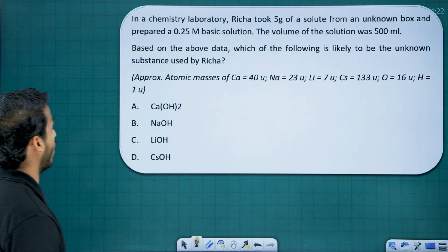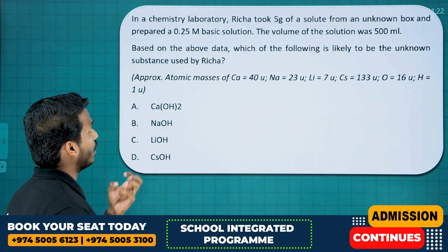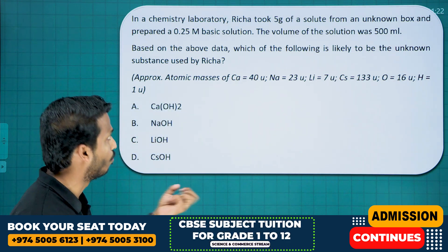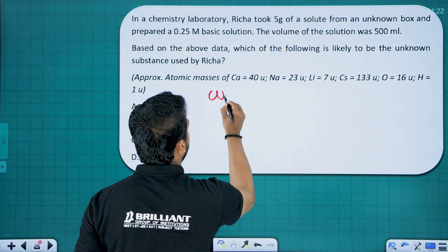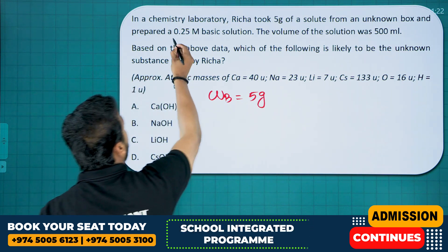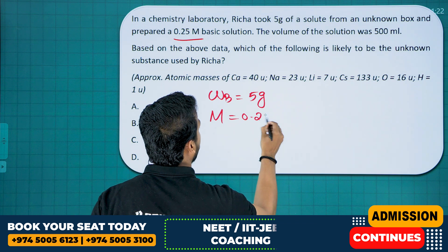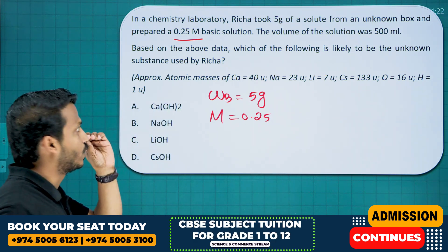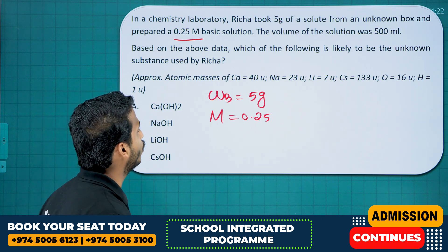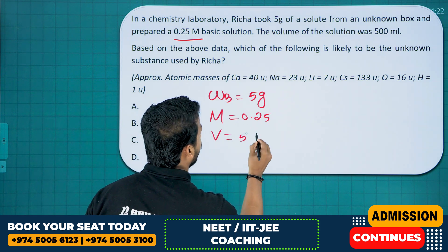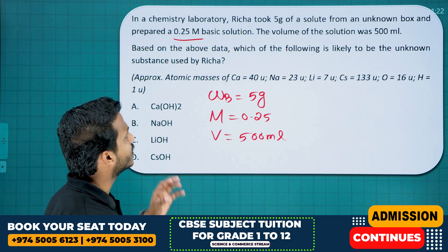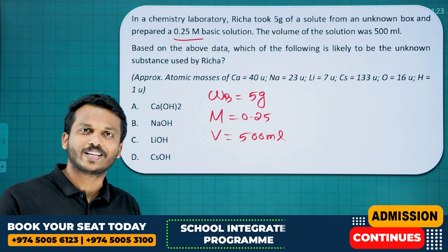Let's discuss question number one. In a chemistry laboratory, Richa took 5 grams of a solute from an unknown box. Weight of solute WB is given as 5 grams. The solution prepared is 0.25 molar — molarity is given as 0.25 M — and it is a basic solution. The volume of the solution was 500 ml. Based on the above data, which of the following is likely to be the unknown substance?